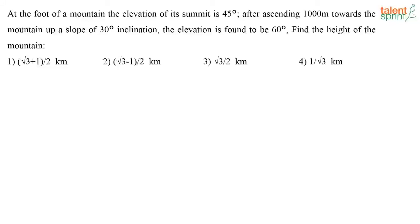At the foot of a mountain, the elevation of its summit is 45 degrees. After ascending 1000 meters towards the mountain up a slope of 30 degree inclination, the elevation is found to be 60 degrees. Find the height of the mountain.